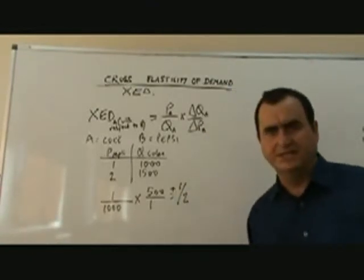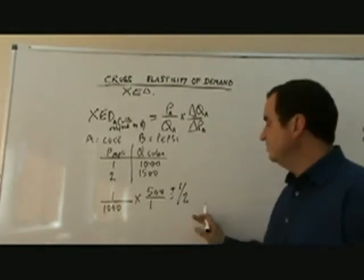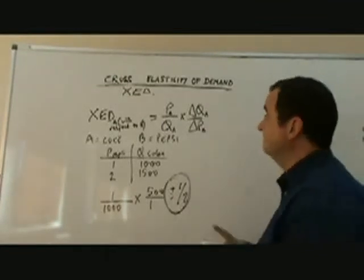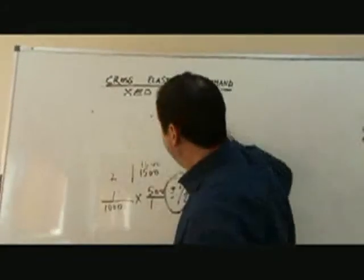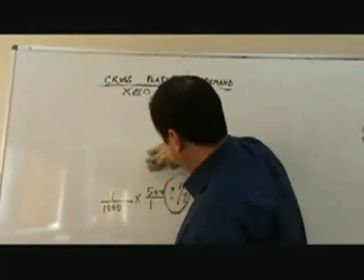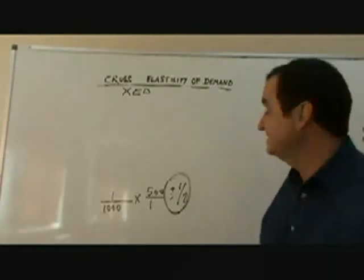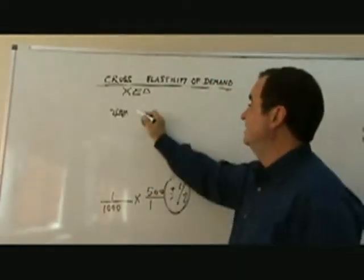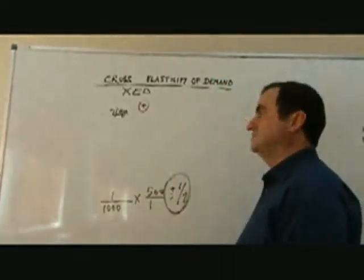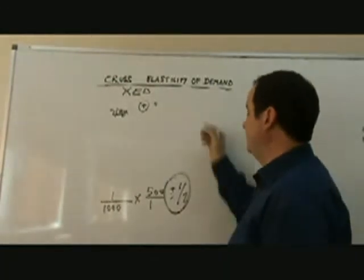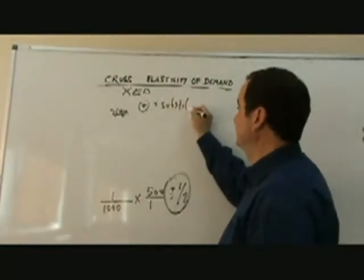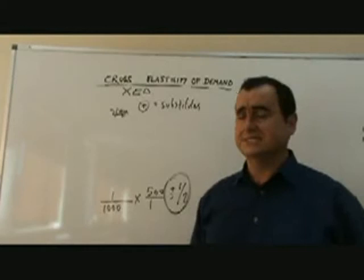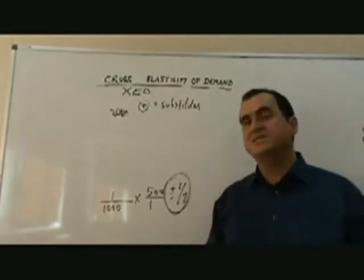Well, just like with income elasticity of demand, it's really important that you take your value and you look at the sign and the size. So, we've got this, plus a half. Sign, is it plus, is it minus? We know that a plus value on the cross elasticity of demand denotes that these goods are substitutes. Now, we might have expected Coke and Pepsi to be substitutes, but we couldn't be sure of it until we analyze the data.